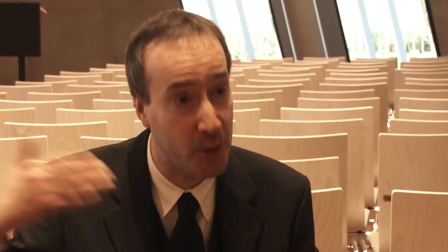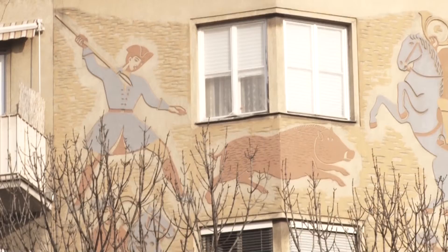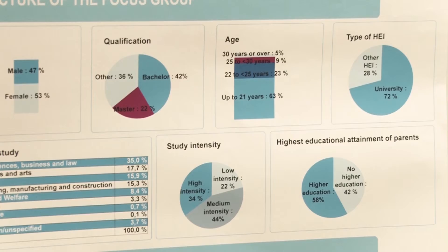Many societies experience the demographic change towards an ageing population and this will also affect the structure of the student body. Of course, it has certain implications for the way student financing is working. For instance, in our data we see that the share of students who receive public support is continuously decreasing with advancing age. That means the older the students get, the less likely they are to receive public support.